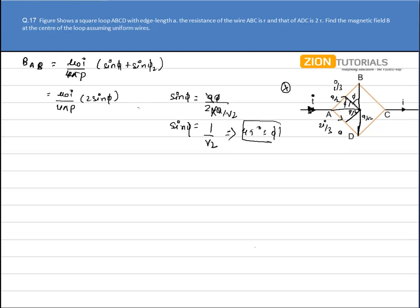Substituting this value, I have mu naught as 4 pi into 10 to the power minus 7 divided by 4 pi P. This is the perpendicular distance given by A by 2, into 2 times sine phi that is 1 by root 2. 4 pi and 4 pi is cancelled, so I have 10 to the power minus 7 into 2 root 2 I by A.